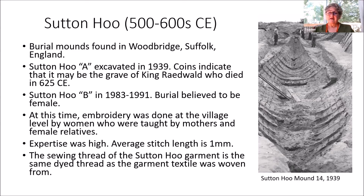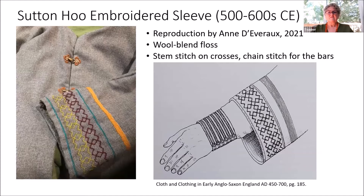At this time, embroidery was done at the village level by women who were taught by mothers and female relatives. The expertise was very high and the stitch length was tiny. The sewing thread of the Sutton Hoo garment is the same dyed thread as the garment textile was woven from — so keep that in mind when doing reproductions. There is an embroidered sleeve found at Sutton Hoo, and my friend Ann did a reproduction last year using a wool blend floss. She used stem stitch on the crosses and chain stitch for the bars.